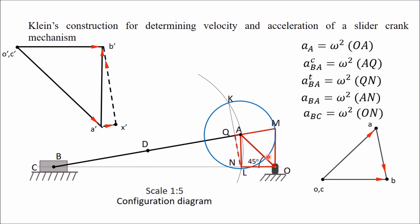Here it has been assumed that OA has only one component of acceleration — the radial (centripetal) component. If angular acceleration of OA is also given in any direction, the diagram will slightly differ. That case will be explained with a separate example.